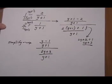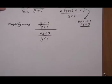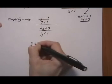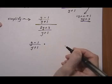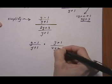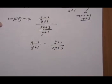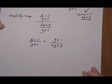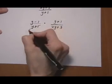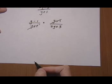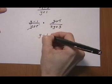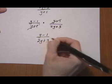Now we're ready to turn it to multiply and take the reciprocal of the denominator. We get (y minus 1) over (y plus 1) times — flip it — (y plus 1) over (2y plus 3). There's no factoring to do, so we go right to canceling: (y plus 1) cancels top and bottom. Then we multiply across for the final answer: (y minus 1) over (2y plus 3).